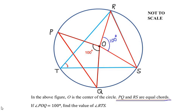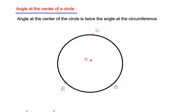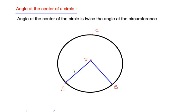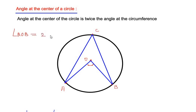Now that we have angle ROS, let us find angle RTS using another circle theorem: the angle at the center theorem. It states that the angle at the center of the circle is twice the angle at the circumference. I have drawn a circle with three points A, B, and C on the circumference and center O. If points A and B make angle AOB at the center, and the same two points make an angle at circumference point C, then angle AOB equals two times angle ACB.